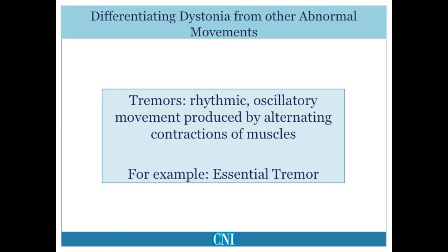The most common forms of tremor are those seen as part of essential tremor and Parkinsonian tremor. Patients with dystonic tremor usually have superimposed abnormal posture of the affected body part, in addition to the tremulous movements. Isolated head tremor without tremor elsewhere in the body is usually due to cervical dystonia and dystonic tremor, but is commonly misdiagnosed as essential tremor.